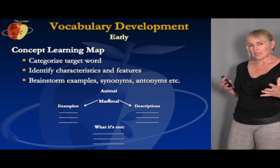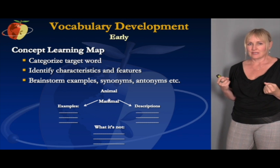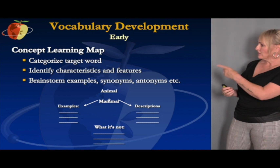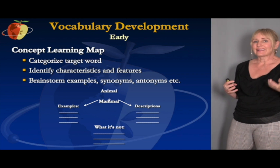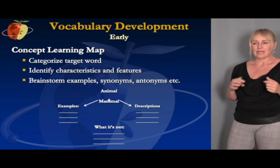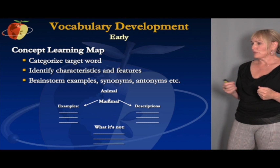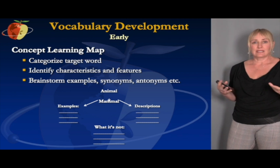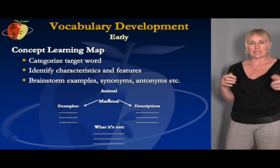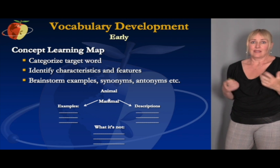As students get older, you can start using more graphic organizers — either with pictures or eventually with words — to help them have a deeper meaning of more complex words. One great strategy is called the concept learning map. On this graphic organizer, they're categorizing the word, identifying characteristics and features of that word, helping them make connections to things they might already know, and then brainstorming examples, synonyms, or antonyms. This creates deeper meaning and understanding, so the word sticks with them and they become comfortable using it in their own language.